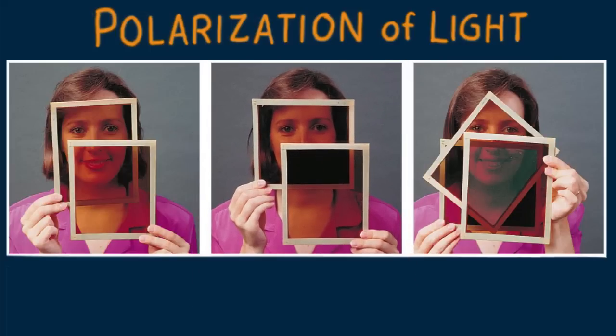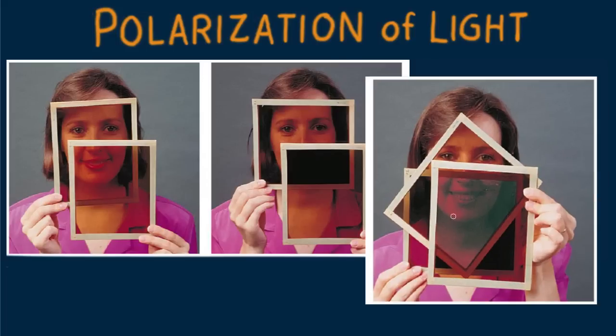The intriguing situation is shown when she inserts a third polaroid between two crossed polaroids. Aha! Light is transmitted. Why?